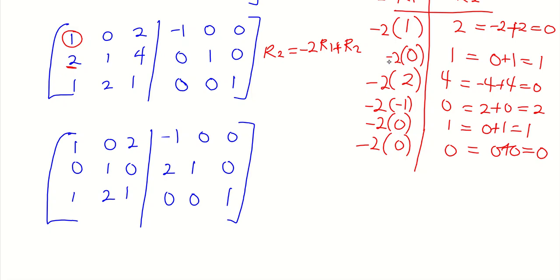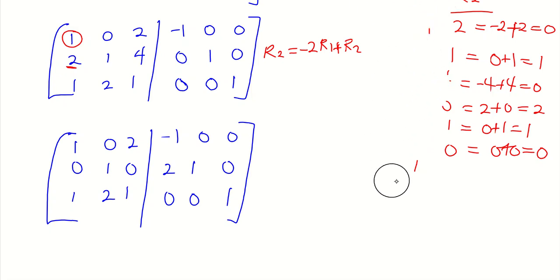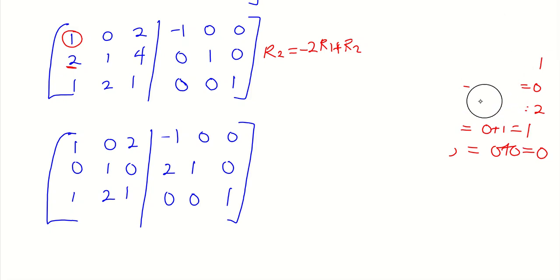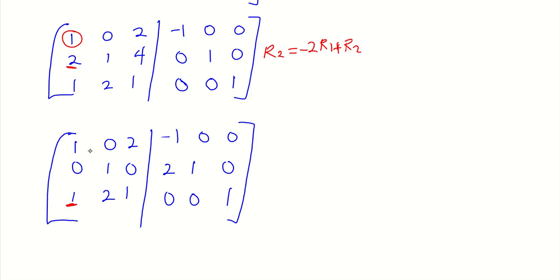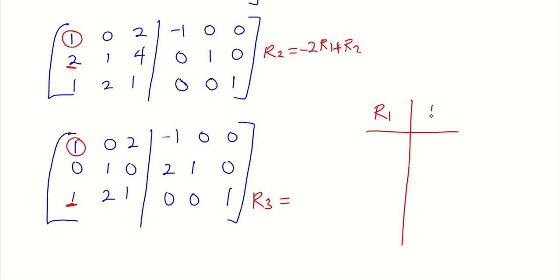The next idea is to change the 1 in row 3, column 1 to 0 by considering the pivot in row 1. Since the effect is going to happen in row 3, we write row 3 is equal to... Using our simple illustration with row 1 and row 3: row 1 has 1 and row 3 has 1. What must we do so these two elements go to 0? If we subtract row 1 and add to row 3, minus 1 plus 1 equals 0. So our formula becomes: row 3 = minus row 1 plus row 3.